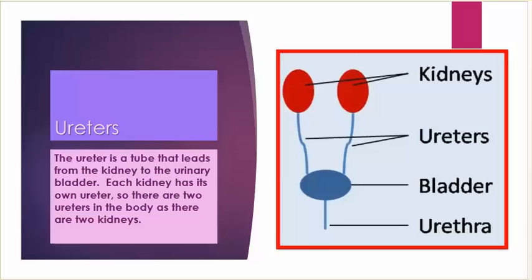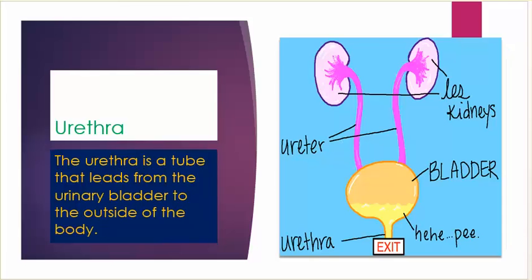Ureters: the ureter is a tube that leads from the kidney to the urinary bladder. Each kidney has its own ureter, so there are two ureters in the body, as there are two kidneys. Urethra: the urethra is a tube that leads from the urinary bladder to the outside of the body.